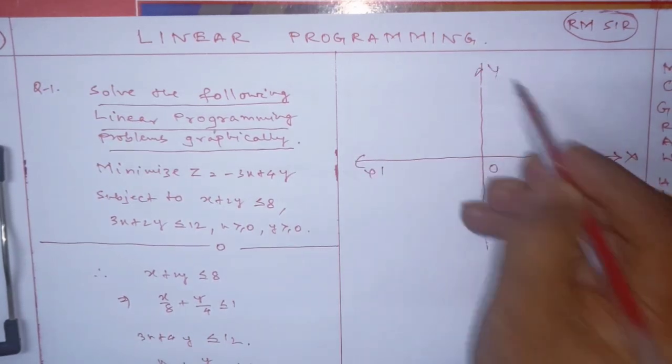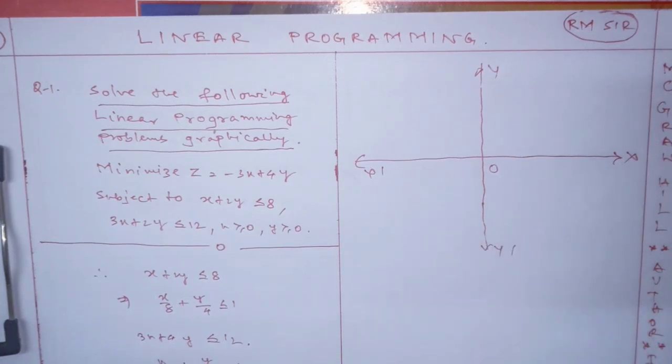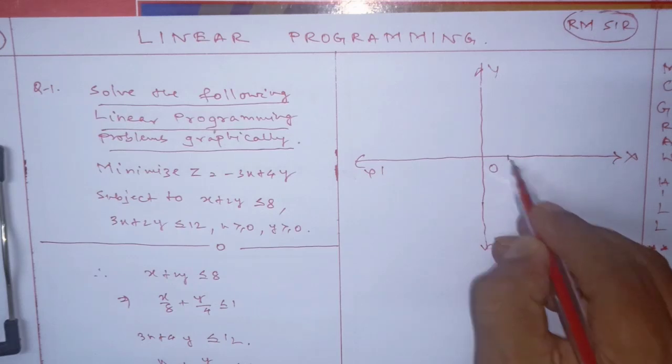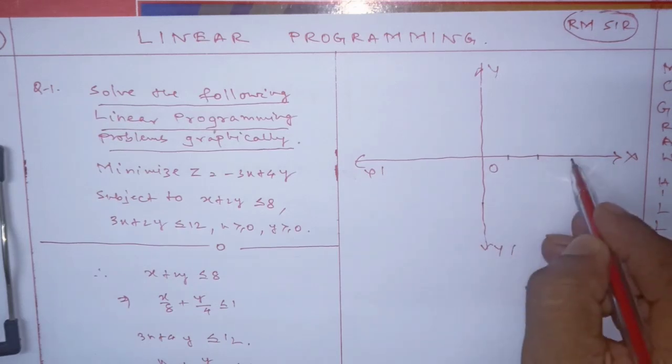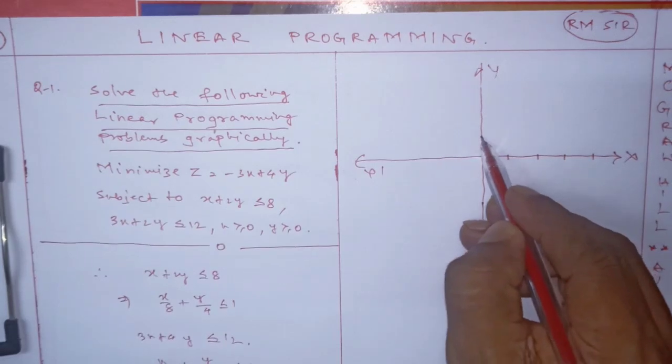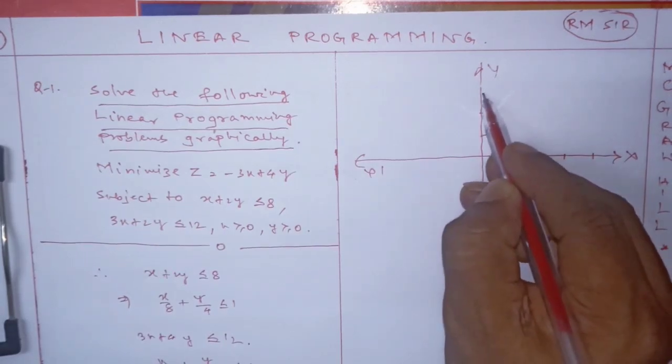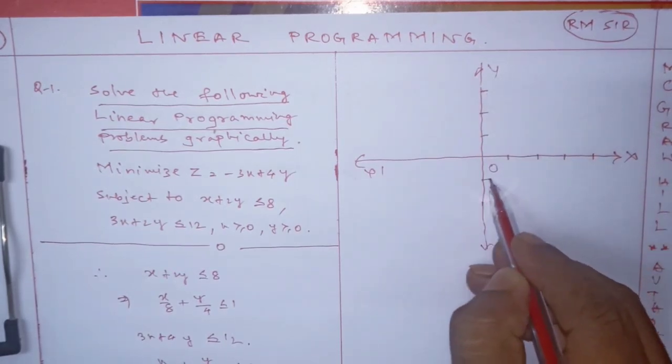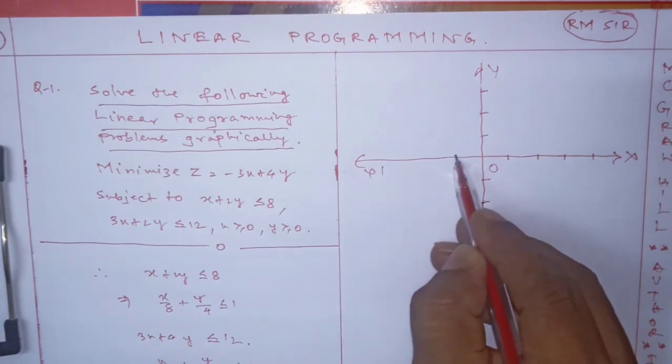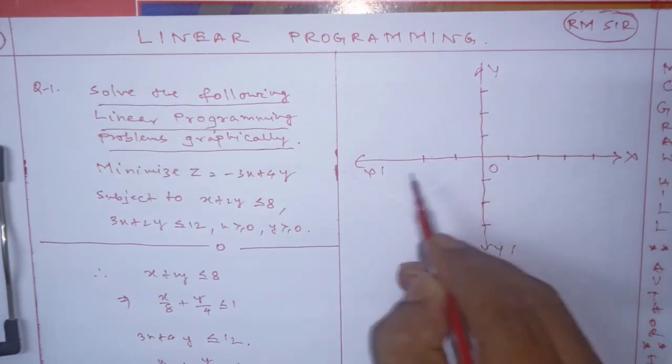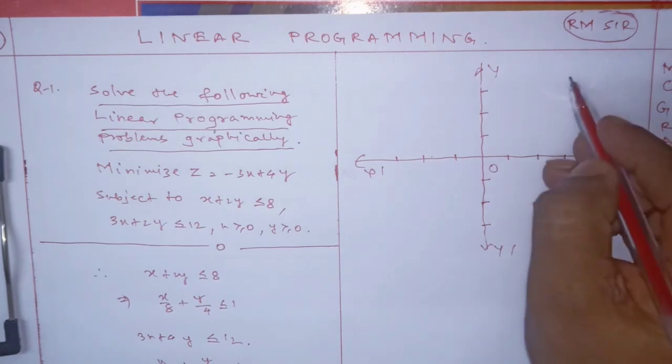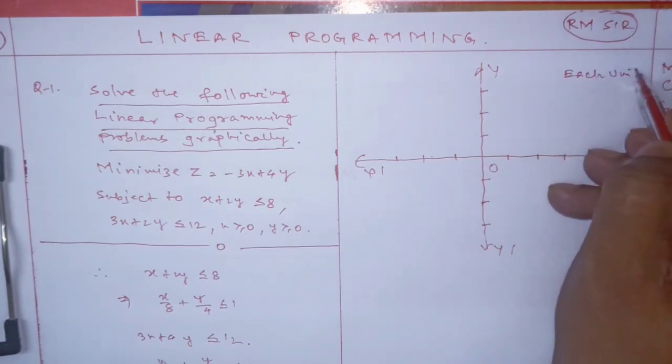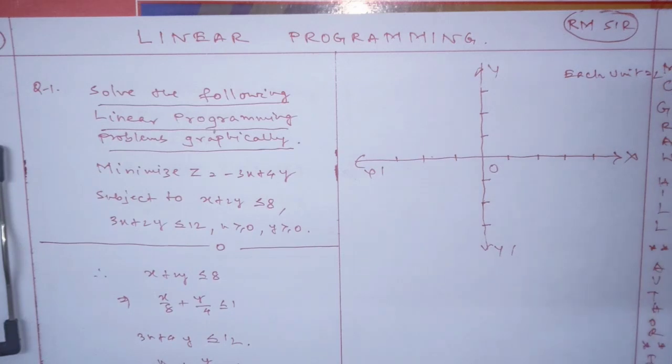Now see what is the maximum value we need. Here 8 and 4, and 4 and 3. So consider each unit as 2. This is 2, this is 4, this is 6, this is 8. This is 2, this is 4, this is 6. This is minus 2, minus 4, minus 6, and minus 2, minus 4, minus 6 like this. Here you can write each unit equals 2.